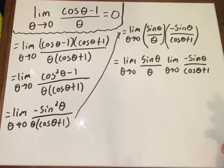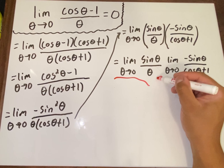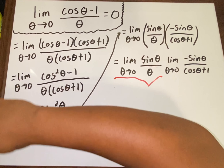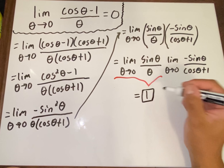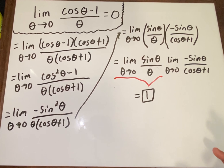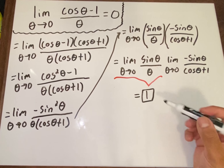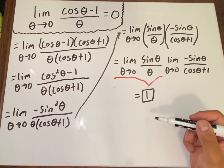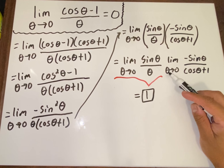Now this first limit right here — the limit as θ→0 of (sin θ)/θ — is a very, very special limit. This equals 1. I know a lot of you are wondering how, so I'll put a link in the description; you prove it using geometry and the squeeze theorem, inscribing a circle in an octagon. But yes, this equals 1.